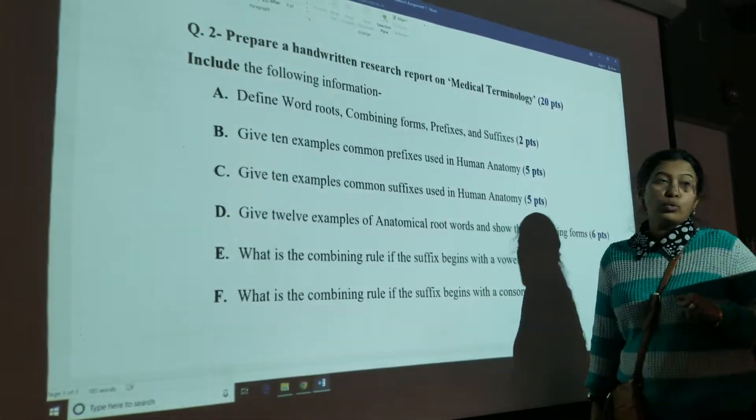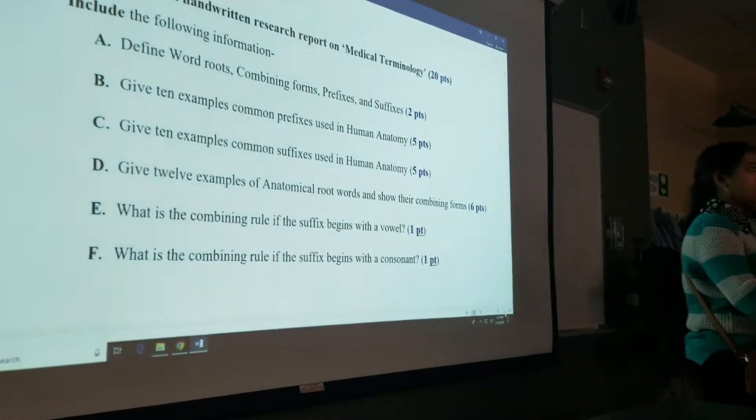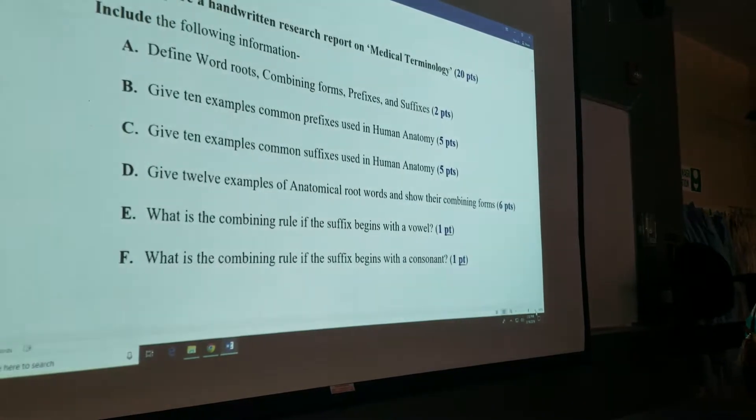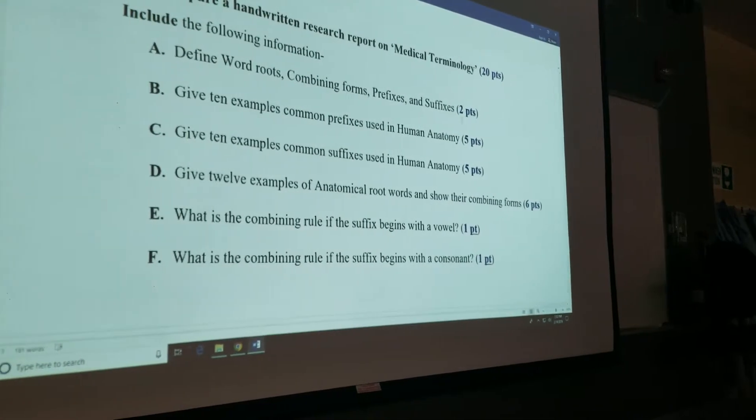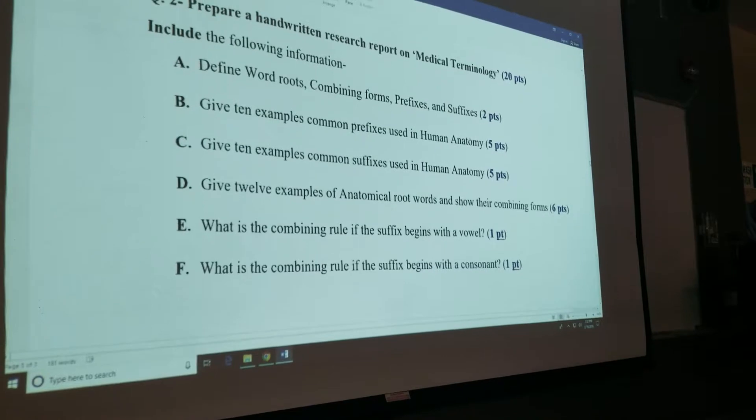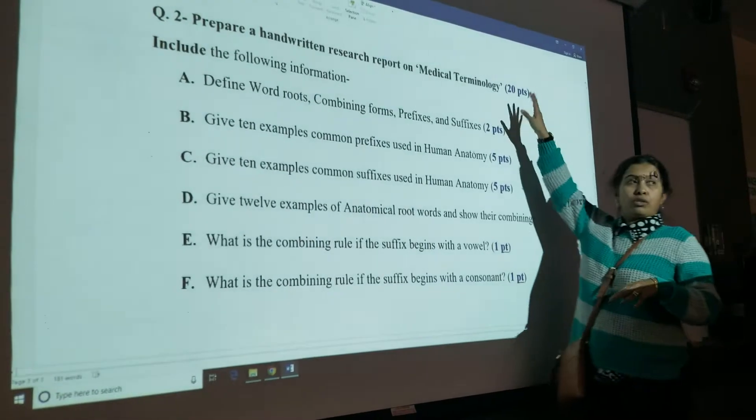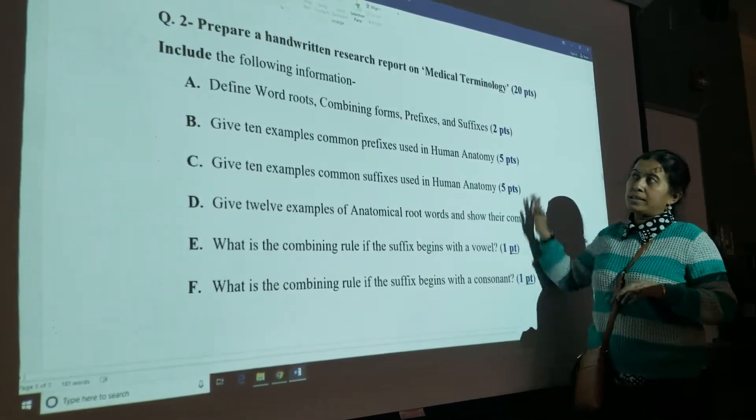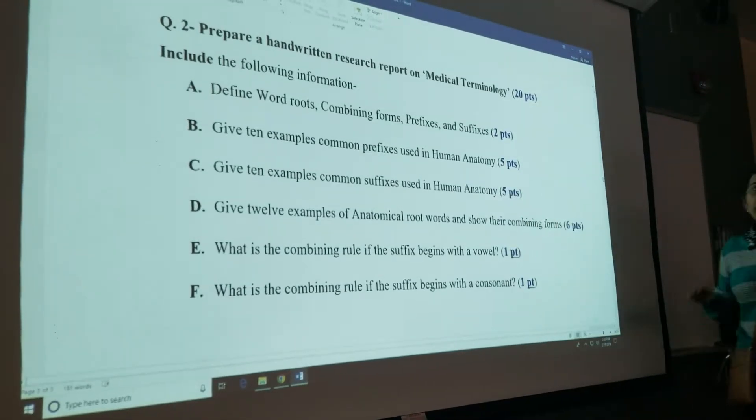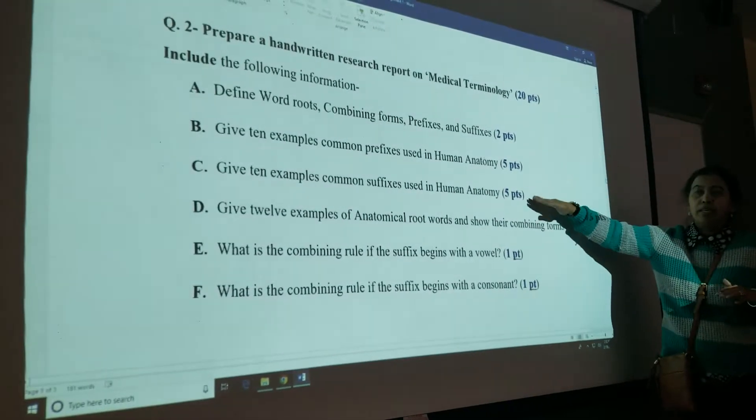This is question number two of your research assignment one. Here you have to prepare a handwritten research report on medical terminology. Those who have done a course on medical terminology are at an advantage. You get 20 points for this entire question and you simply have to follow these instructions.